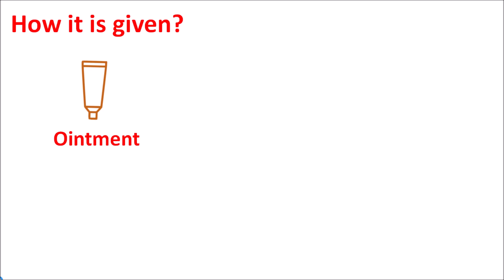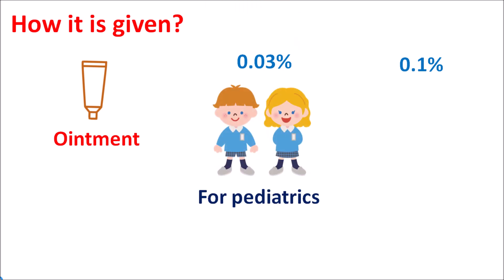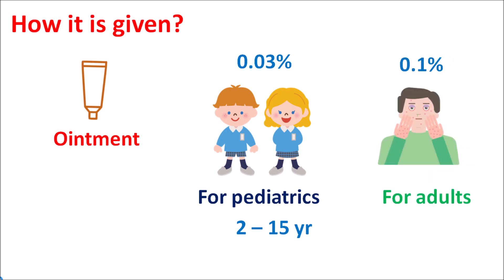Flu-like symptoms can be observed with tacrolimus. Regarding how it is given — this drug is available as an ointment for topical use; for systemic purpose it is available as a capsule. Topically it is applied as an ointment at two strengths: 0.03 percent and 0.1 percent. The low concentration of 0.03 percent is indicated for pediatric patients — children aged 2 to 15 years — for topical treatment of atopic dermatitis. Adults can use the 0.1 percent formulation.